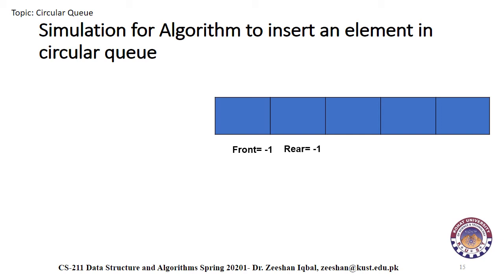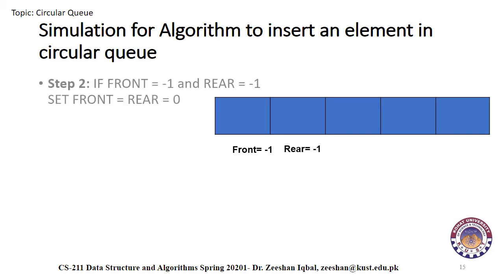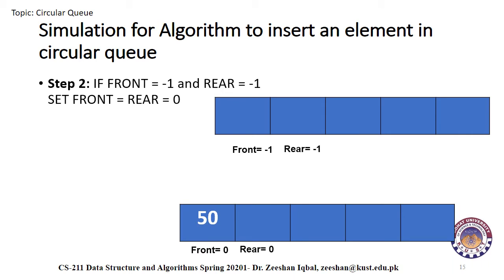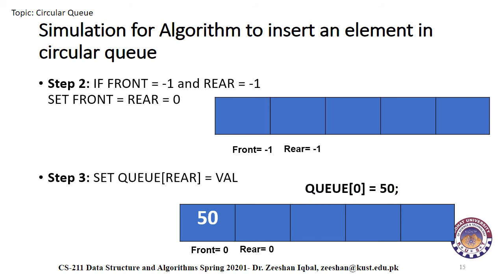Suppose we have a case where the queue is empty and both front and rear are set to minus one. In this case, the first if condition in step two will be true, and we are going to insert the first value in the queue. We have to set both front and rear to zero. Suppose we want to add 50 as the first value at index zero. After the insertion, the queue will look like this. Step three will be executed: with value 50 and rear equal to zero, by setting queue of zero equal to 50, the array will be like this.